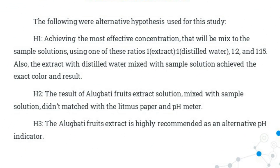The following were alternative hypotheses used for this study. Hypothesis 1: Achieving the most effective concentration that will be mixed with the sample solutions using one of these ratios — 1:1, 1:2, and 1:15 — also, the extract with distilled water mixed with sample solution achieves the exact color and result. Hypothesis 2: The result of alugbati fruit extract solution mixed with sample solution did not match with the litmus paper and pH meter. Hypothesis 3: The alugbati fruit extract is highly recommended as an alternative pH indicator.